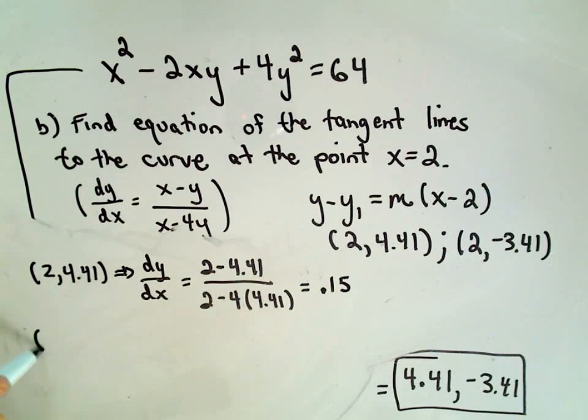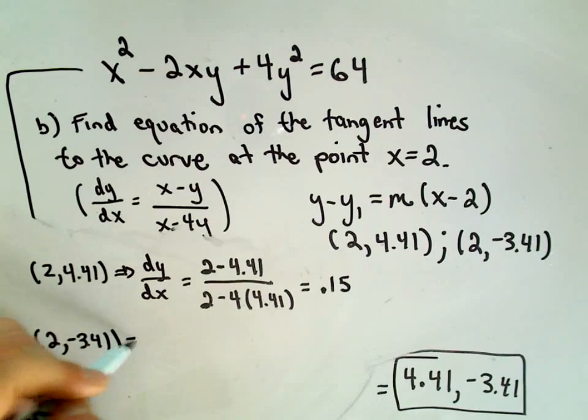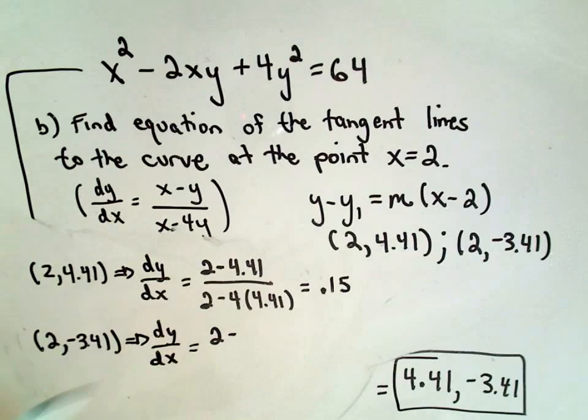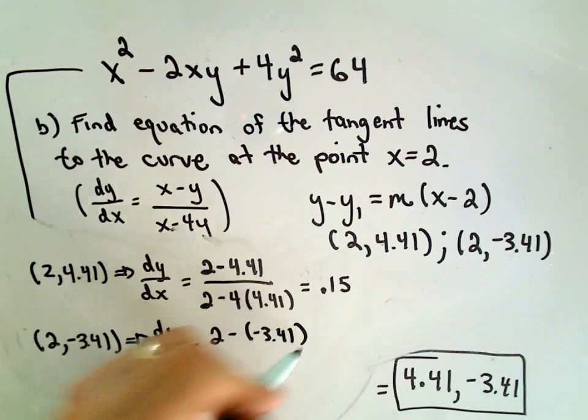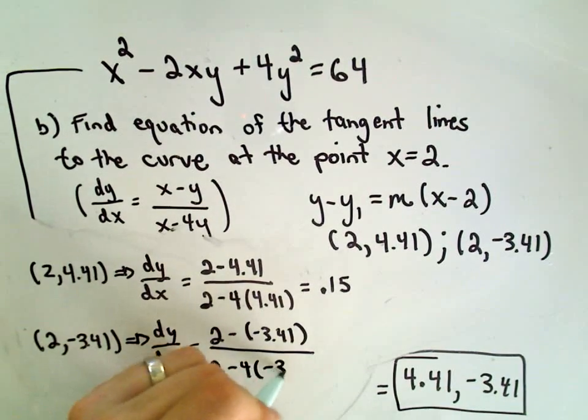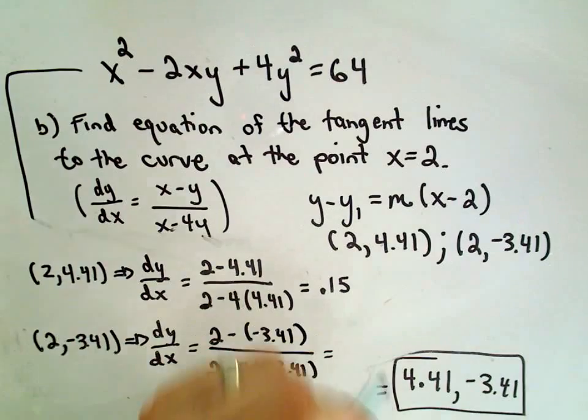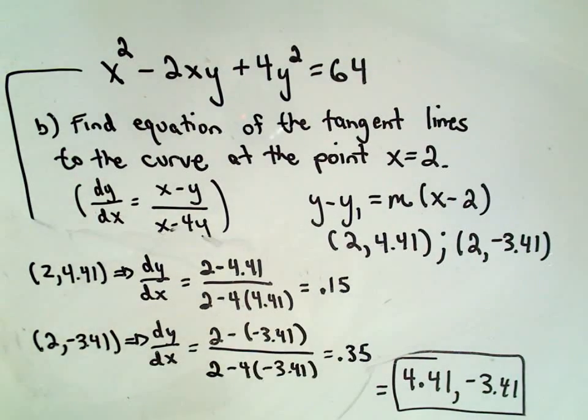If you plug in the second point, so again 2, negative 3.41 into our dy/dx formula. So x is 2 minus negative 3.41. We'll divide that, again, 2 minus 4 times the y value, again, which is negative 3.41. I plug this into my calculator. I'm getting this to be roughly, or to be 0.35.